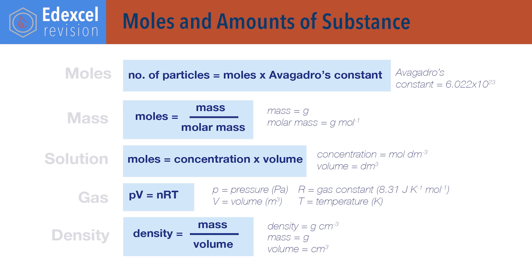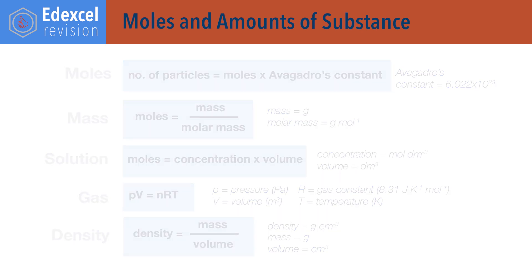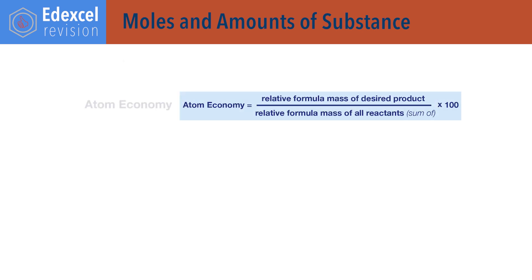Density equals mass divided by volume, where the units for density are based on the units of mass and volume — for example, grams per centimetre cubed. Atom economy equals relative formula mass of desired product divided by the sum of the relative formula masses of all reactants, times 100.